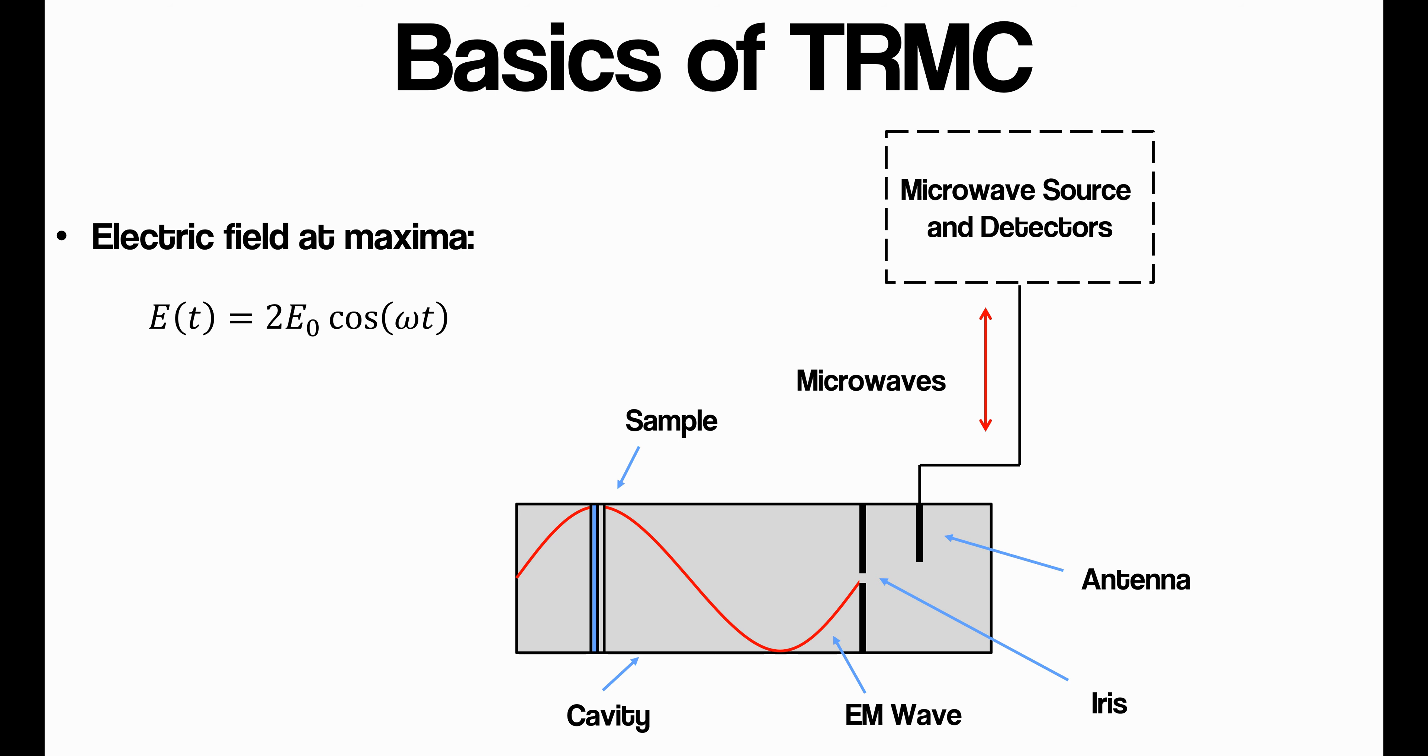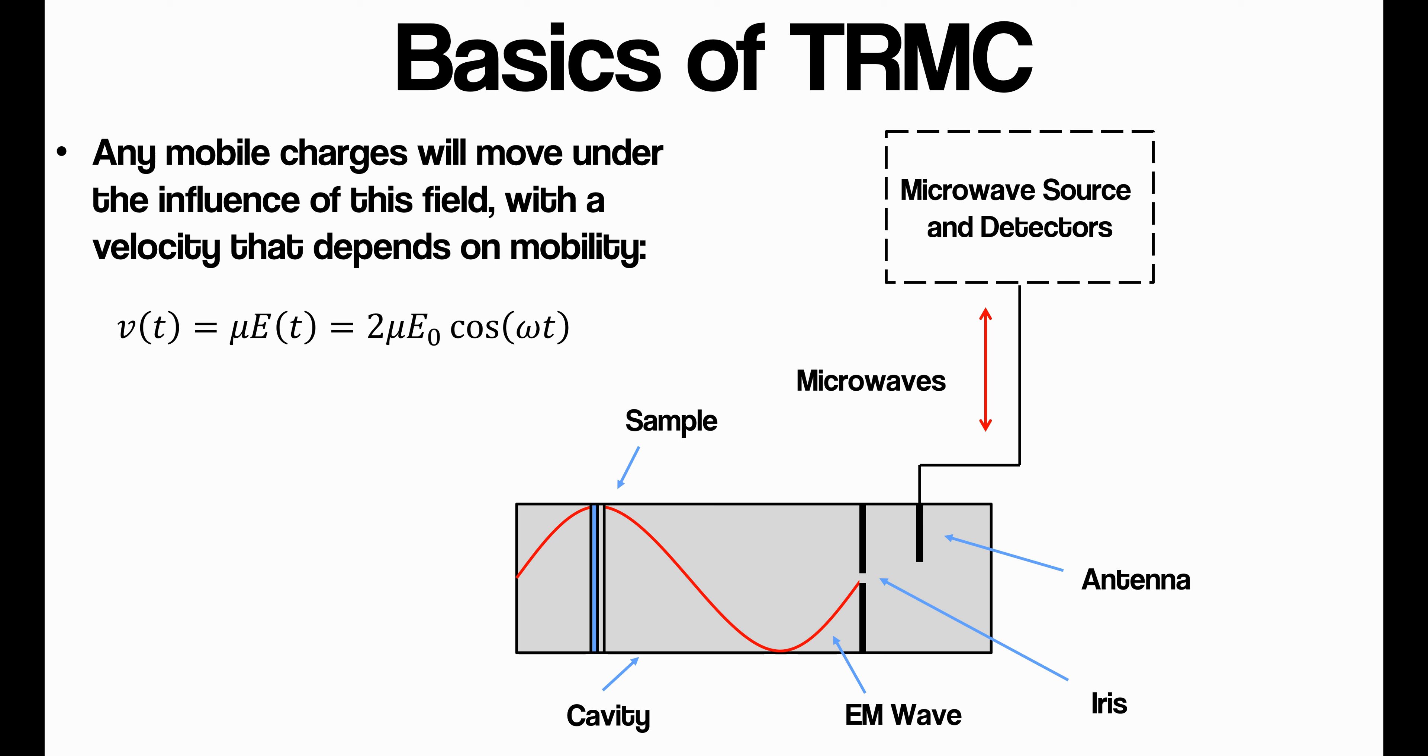So this is a technique primarily used to measure the properties of semiconductors. So these are materials which, at room temperature in the dark, have a very low concentration of electrons and holes. Any electrons or holes which do exist in the semiconductor will move under the influence of the electric field, where the velocity of charge carriers is proportional to the electric field strength, and the proportionality constant is the charge carrier mobility. So because we have this oscillating electric field, the charges are going to be moving in one direction for every half cycle, and then moving back the other direction.